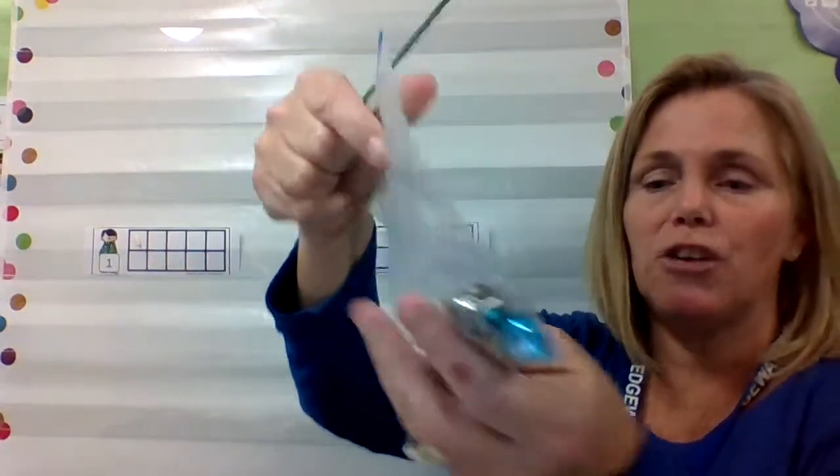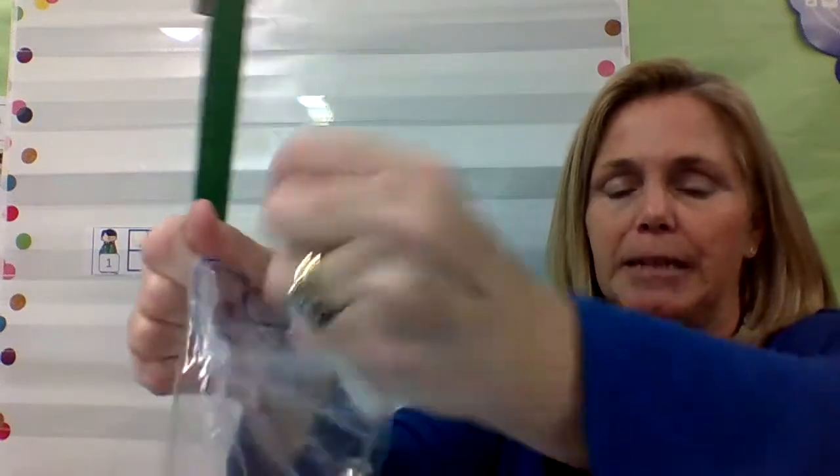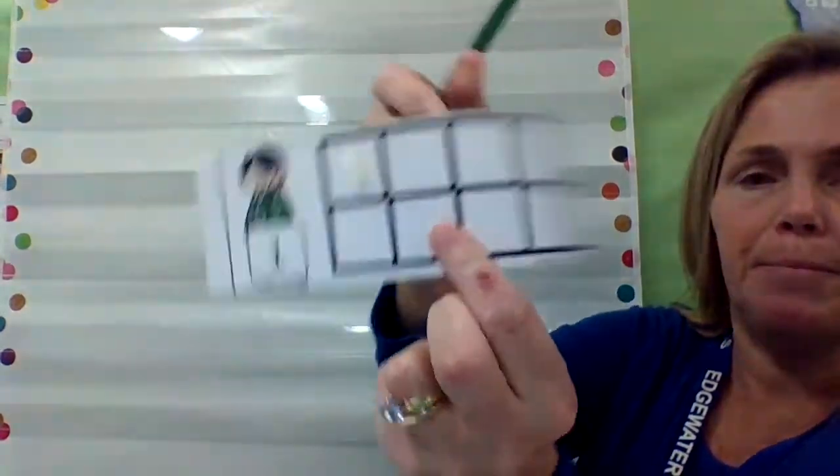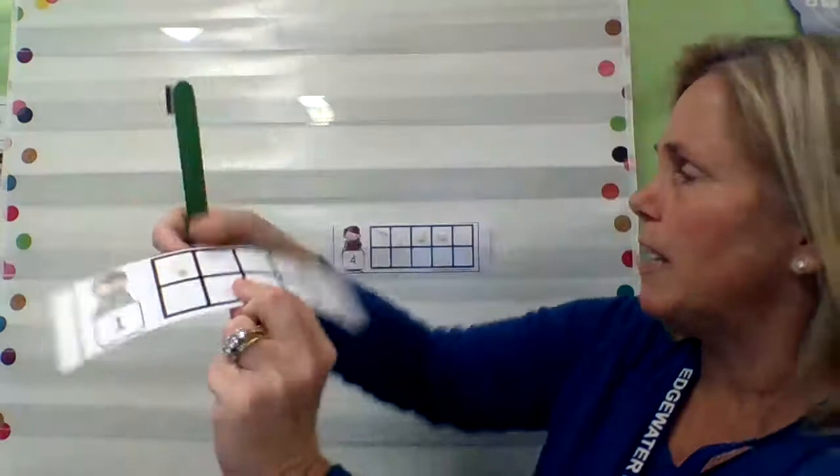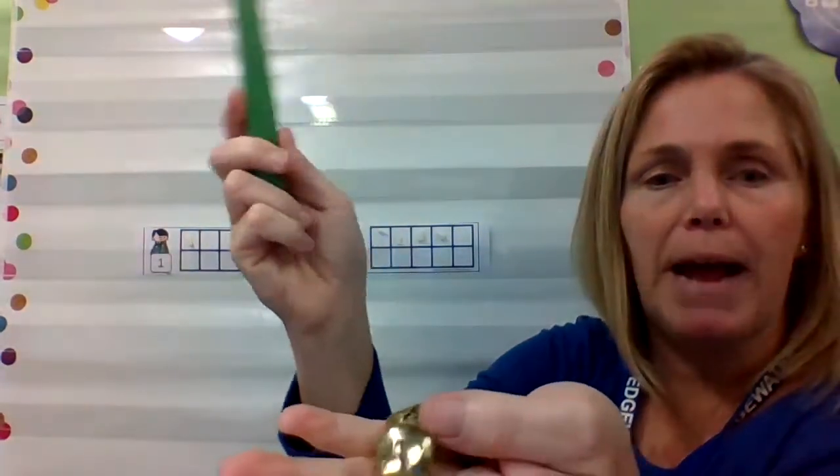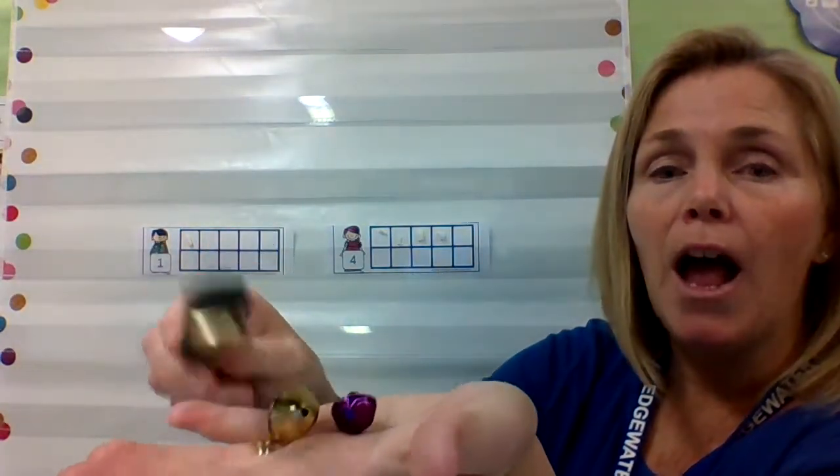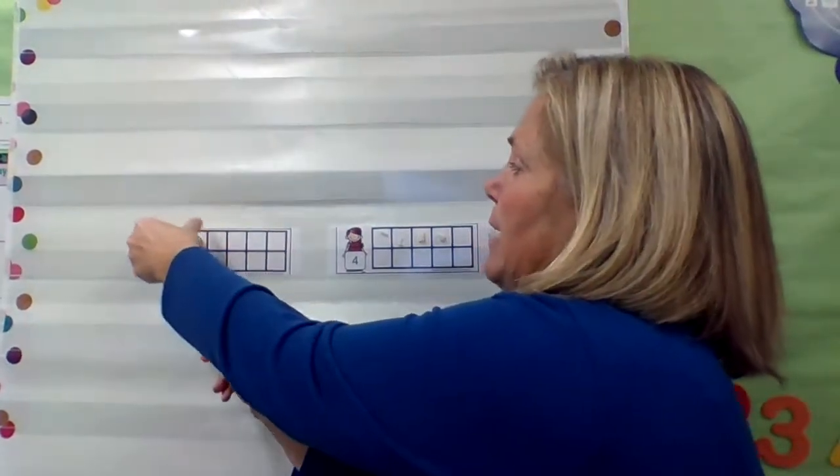You're going to take your jingle bells and put them on the table. Let's look at this 10 frame. What number do you see, friends? Did you say 1? You're right! So what we're going to do is take your magnet wand and put one jingle bell onto your strip. Look, my jingle bell strip has one jingle bell on it.